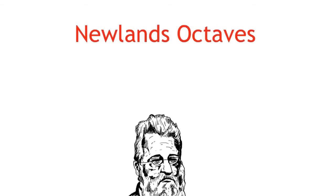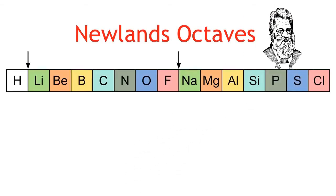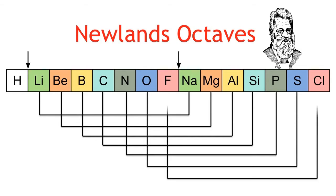Fifty years later came Newland's octaves. Newland noticed that when the elements are arranged in order of their atomic weight, every eighth element had similar properties. So he listed some of the known elements in rows of seven.